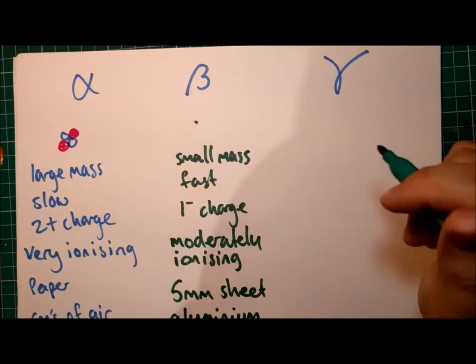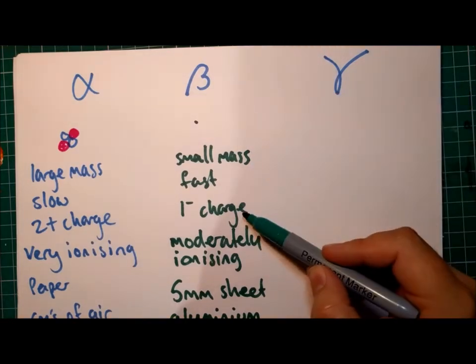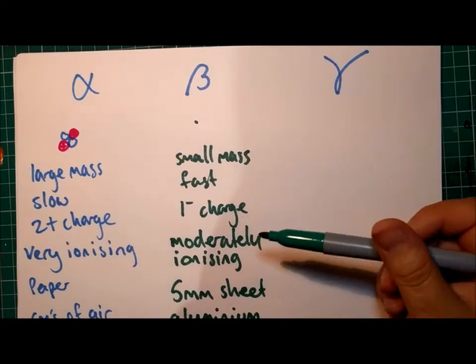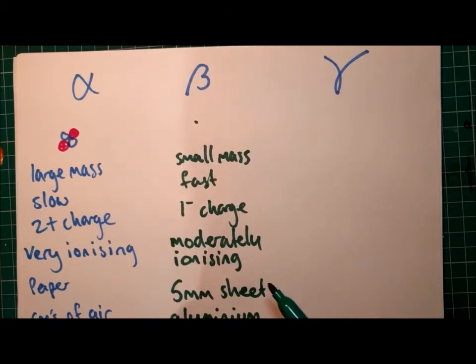So beta particles have a small mass. They travel fast for a particle. They have a one minus charge, a negative charge. They are moderately ionizing and they can be stopped by a five millimeter sheet of aluminum, but they would penetrate, they would go through paper or a few centimeters of air.